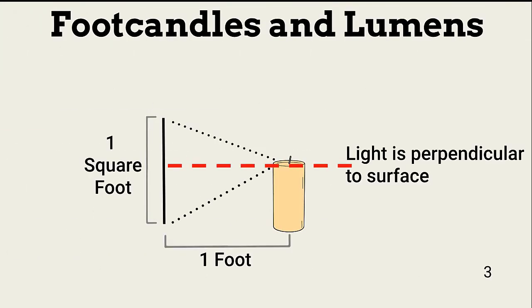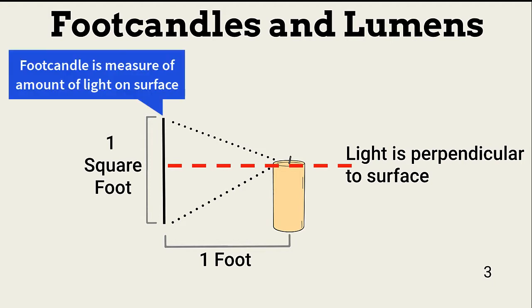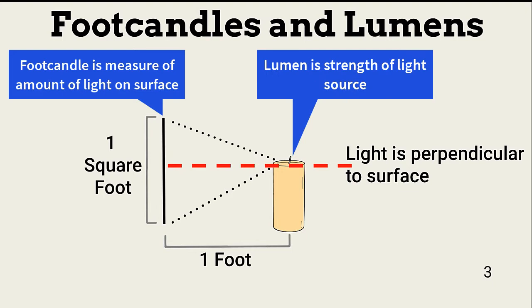A foot candle is the non-metric, or British measure, of light. It is equivalent to the amount of light on a one-foot square area placed perpendicular to a candle one foot away. This is also one lumen. A lumen is the amount of light emitted by a light source. Foot candles measure the amount of light reaching a surface.